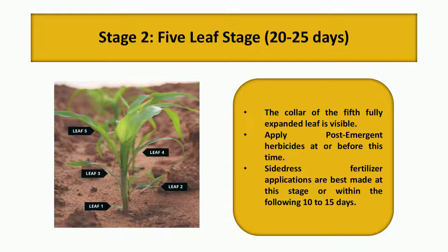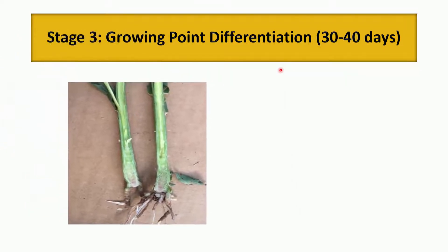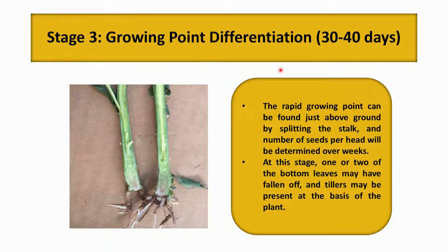The third stage is growing point differentiation, occurring at 30 to 40 days after emergence. The identification characteristic is that the eighth leaf color is visible and rapid growing point can be seen. The splitting of the stalk and number of seeds per head will be determined over the weeks at this stage. One or two of the bottom leaves may have fallen and tillers may be present at the base of the plant.